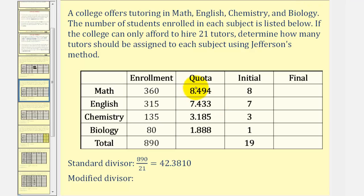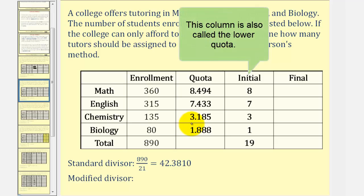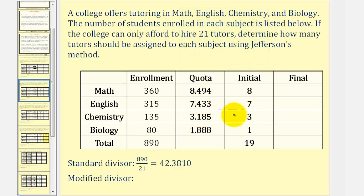Here we see the quotas for the four disciplines. To find the initial apportionment, we drop the decimal part of the quota. So math gets 8, English gets 7, chemistry gets 3, and biology gets 1. Notice how using the initial apportionment the total is 19, but we have a total of 21 tutors.